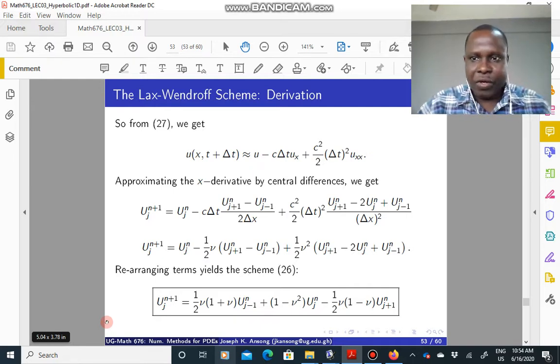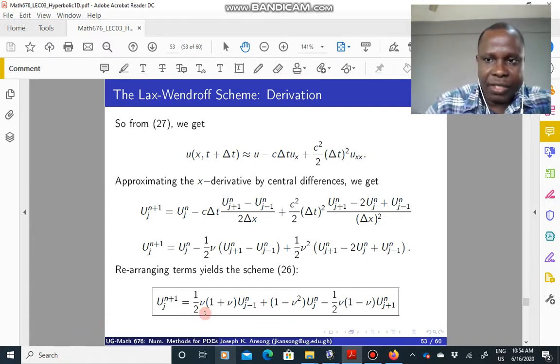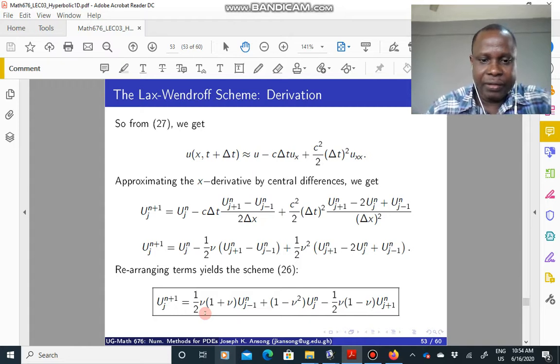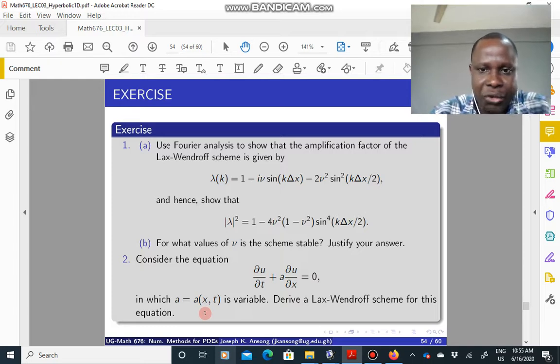So of course, like we do for other schemes, once you have an expression like this, you want to know whether the scheme is stable, unstable, or unconditionally stable, and all of the interesting things. So of course, then you can apply the Fourier analysis to it. So an exercise is to use Fourier analysis to show that the amplification factor for the Lax-Wendroff scheme is given by this. And from here, you find the modulus squared, and show that it's equal to this expression here.